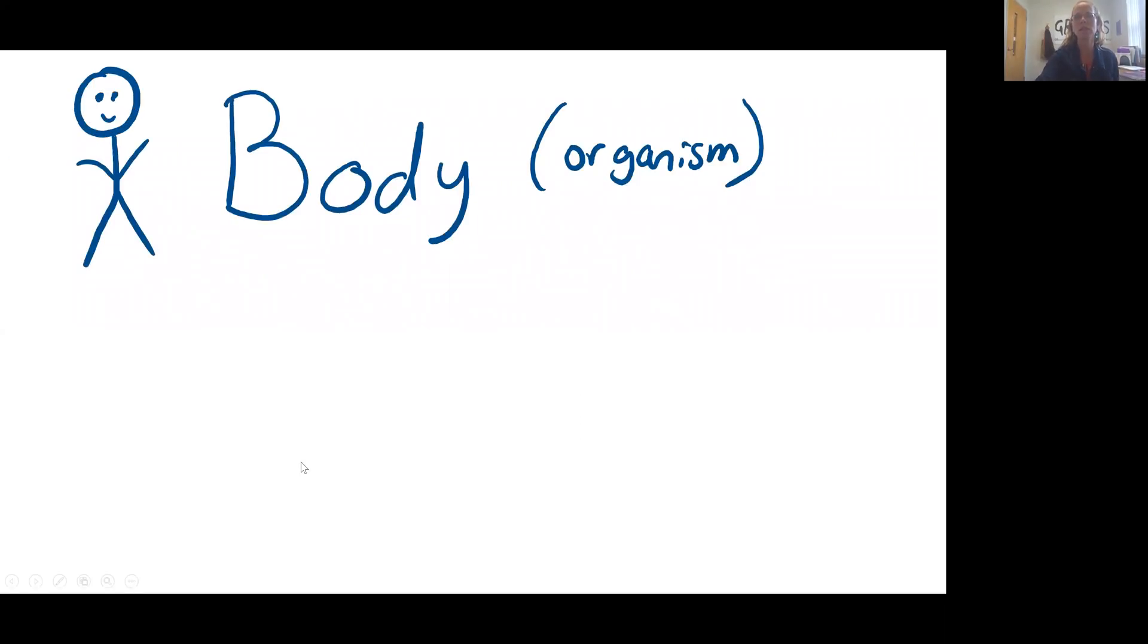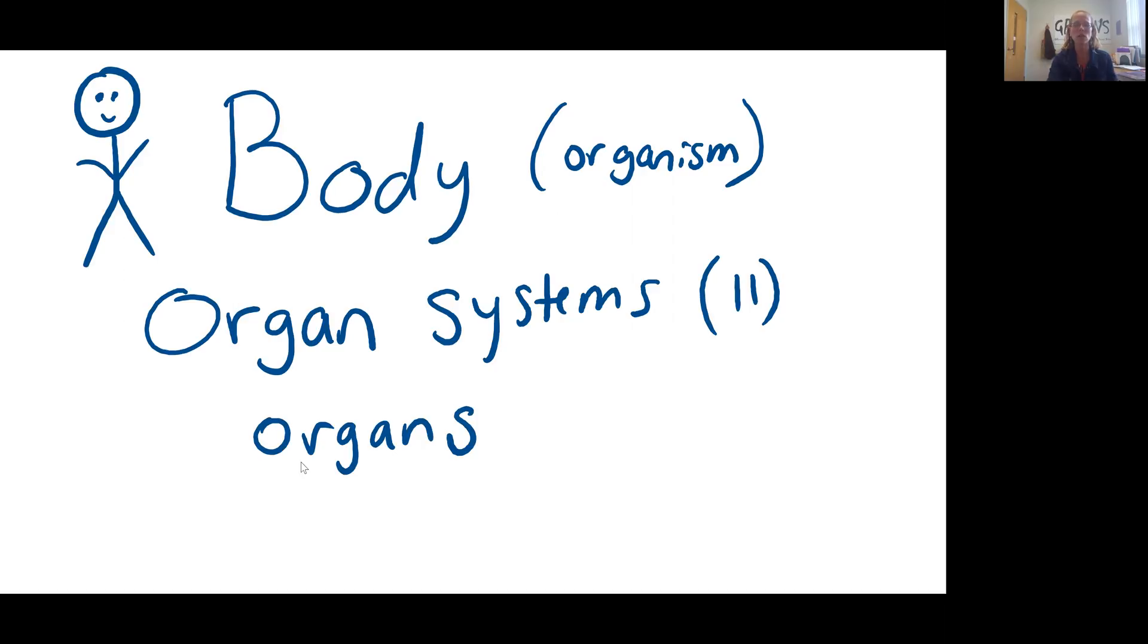All right, so to begin with the largest level of organization, we have the whole organism. For humans, that's the whole body. Your body is made up of organ systems. There are 11 of these, which I'll be introducing as we go through our presentation. From there, we see that our organ systems are composed of organs, and our organs are composed of tissues. Our tissues are discussed in our lab components, primarily focused on in lab, and then mentioned as we go through each of our organ systems in the lecture part of the course.